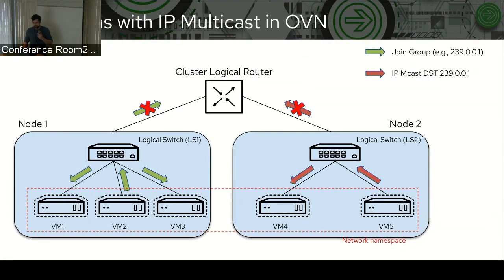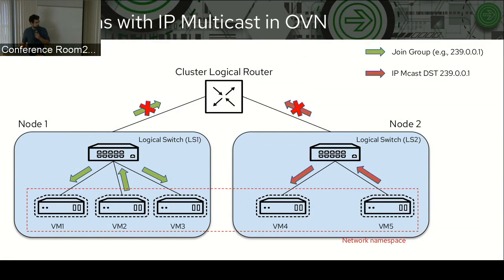Right now, if VM2 wishes to receive multicast, it will send an IGMP join, which will just be flooded in the broadcast domain of the logical switch. And it will be dropped by the logical router, the cluster logical router. And then if VM5 is the source of IP multicast traffic for that group, it sends traffic but it gets flooded only in its own broadcast domain.